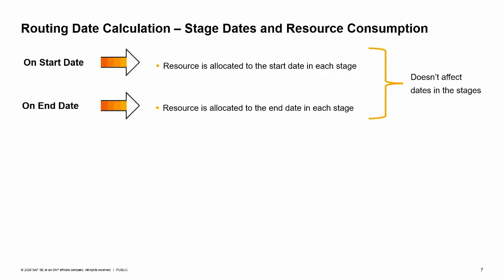The start date and end date in the header are the time range for the consumption of components in the production order. However, different calculation methods may set different start and end dates of the stages within this range. With the on start date and on end date methods, there are no date dependencies between stages in the order. The start date of all stages is defaulted from the start date of the header, and the end date of all stages is defaulted from the due date of the header. With the on start date method, resources are allocated to the stage start date, and with the on end date method, resources are allocated to the end date of the stage.